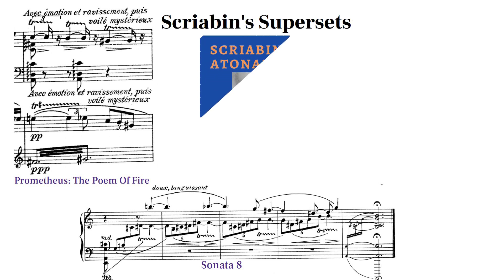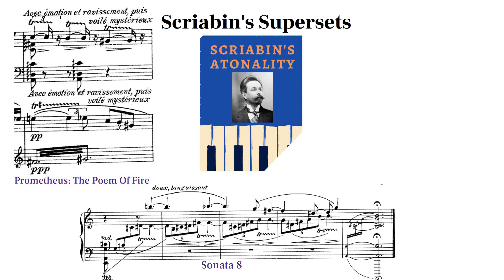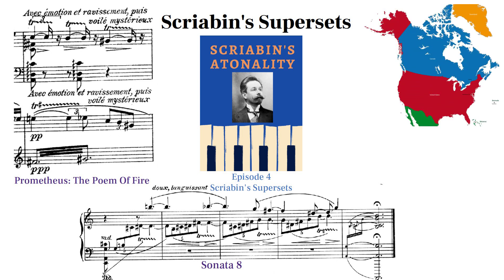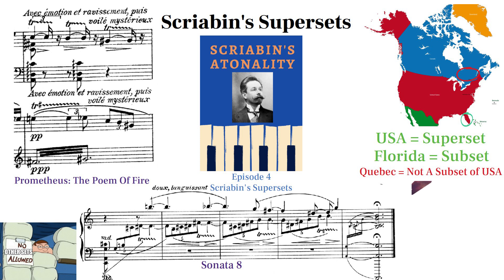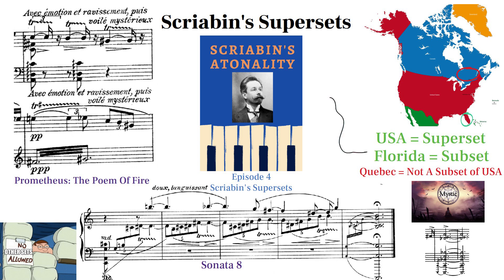Welcome to the fourth episode of Scriabin's Atonality, where we'll be investigating some of the most prominent large sets foundational to Scriabin's late-era harmony. The superset of a piece is the largest set in the piece, in which all other sets are embedded, meaning only subsets of the superset are included in the composition. We'll discuss how Scriabin moves between mystic and octatonic sets, and end with an overview of the supersets used in each work in his late era.